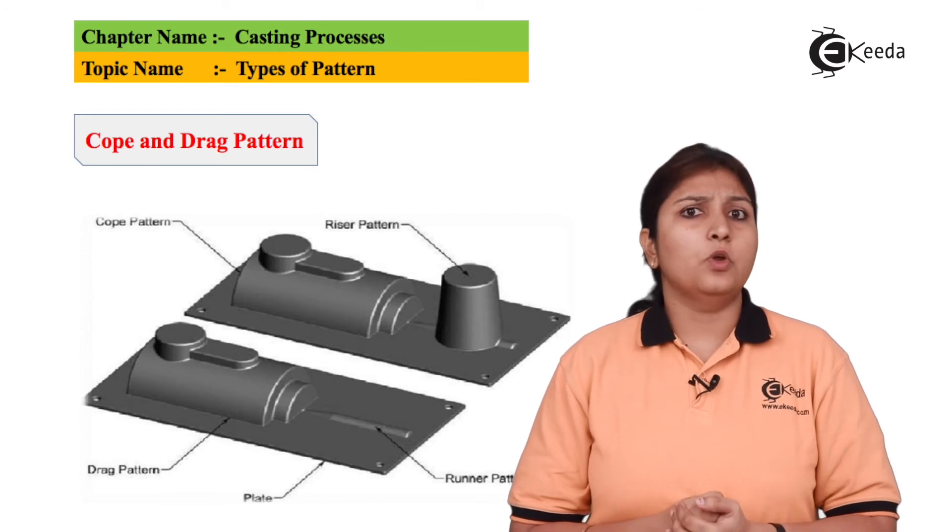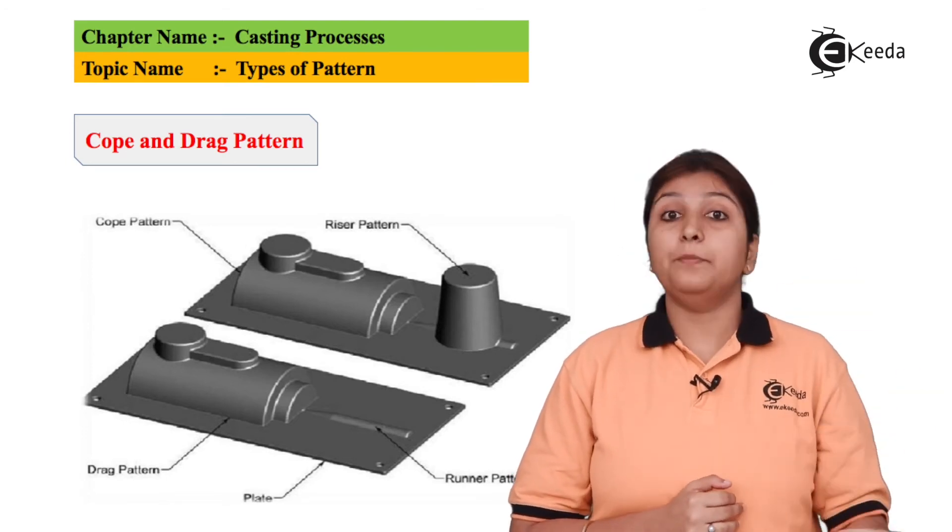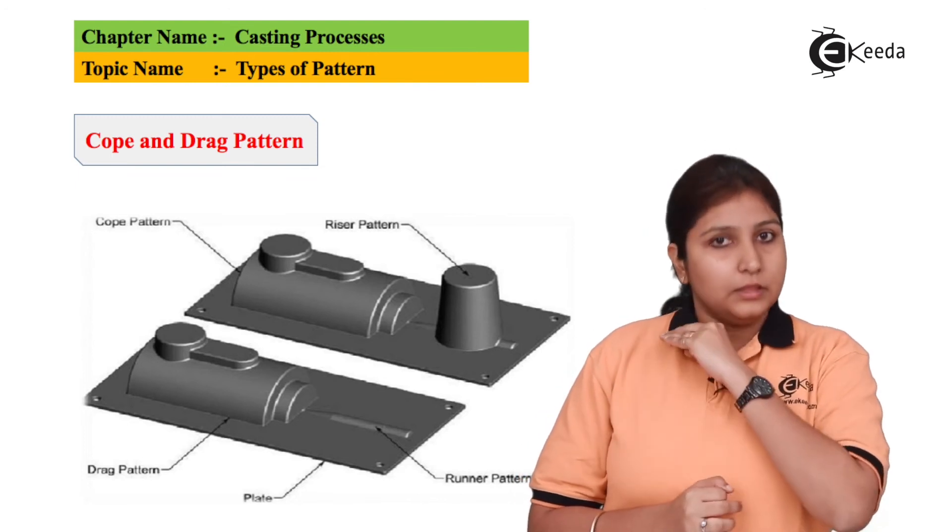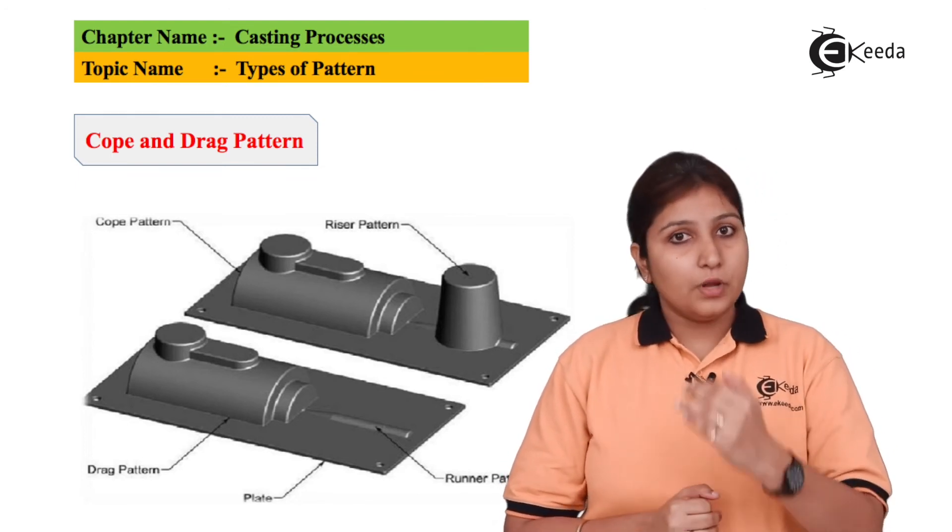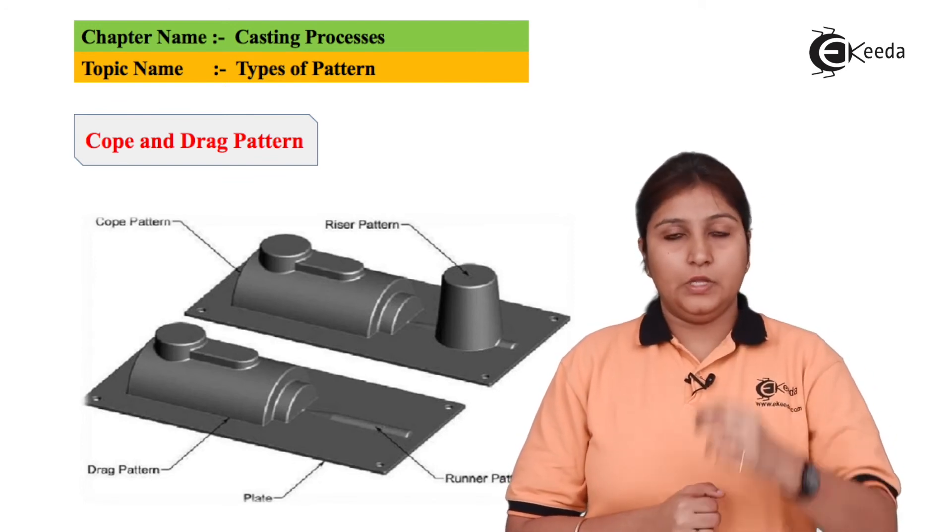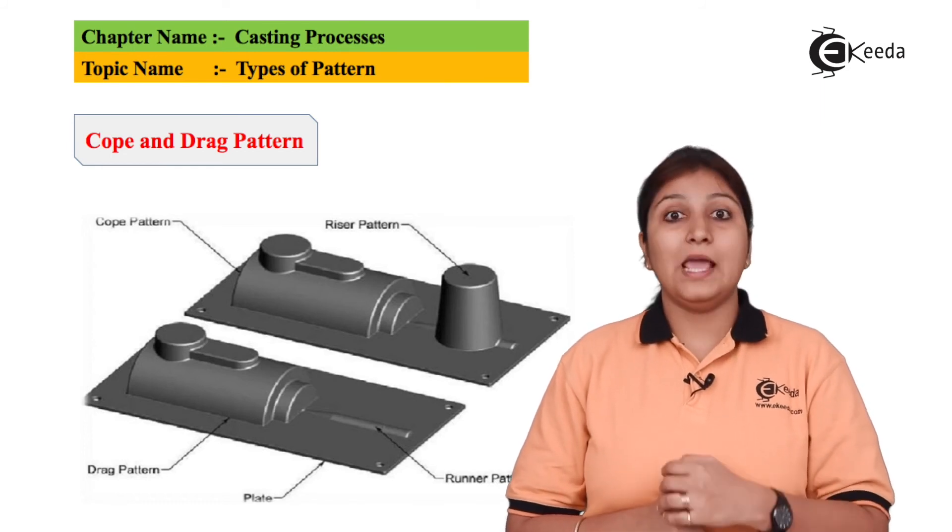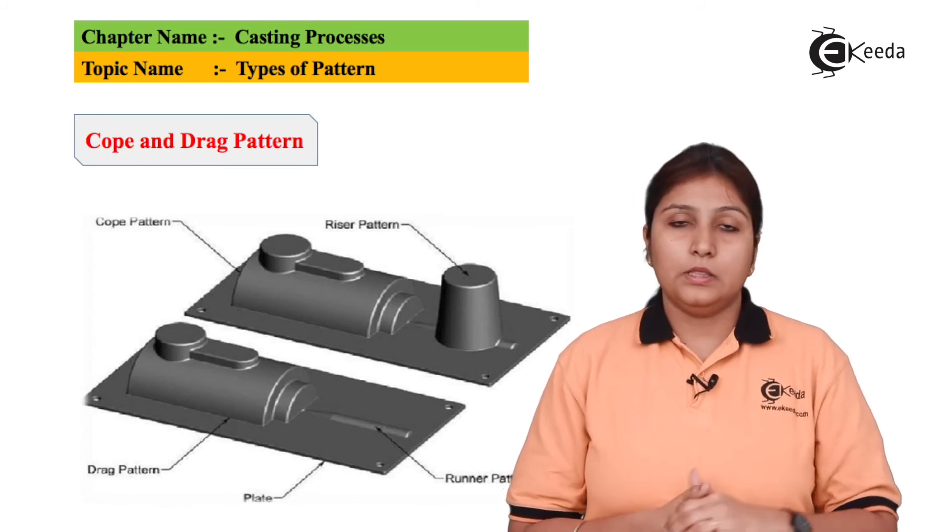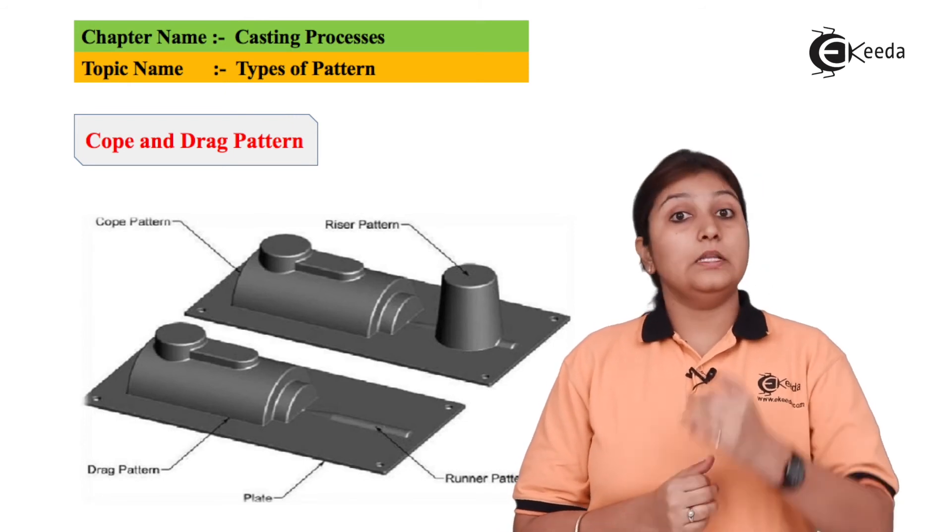And the last pattern which I am going to explain you is the cope and drag pattern. It is the very basic pattern. It was used in split pattern also. But in this, the details of the cope and drag pattern is given. There is a pouring basin, which actually pours the material inside your cavity. There is a sprue, which helps the material to go inside. There is a match plate, which helps in matching the cope and drag.